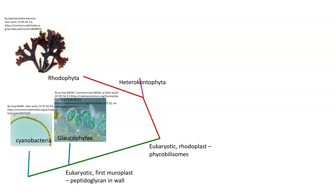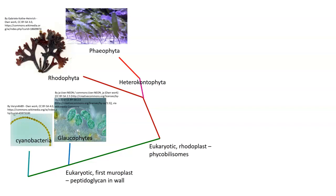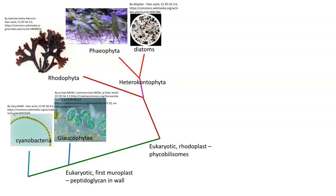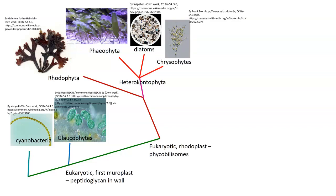From that we also get the Heterokontophyta, which looks at the flagella found on the cell. 'Hetero' means you've got two different flagella on the cell. Out of this we get the Phaeophyta, the brown algae; the diatoms; and the chrysophytes, which are the golden algae.